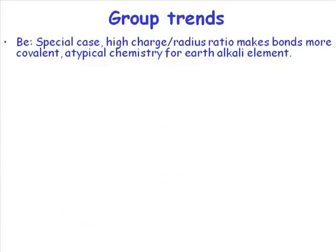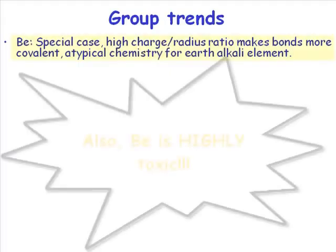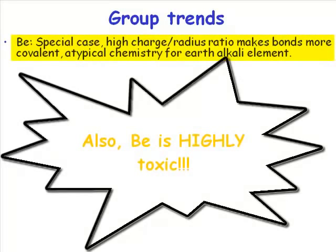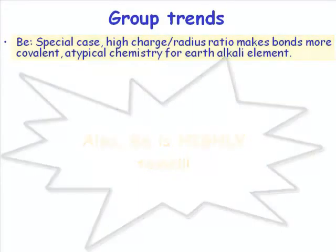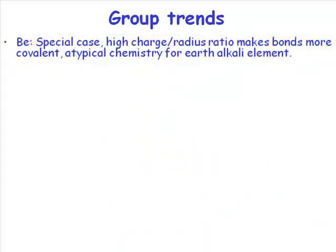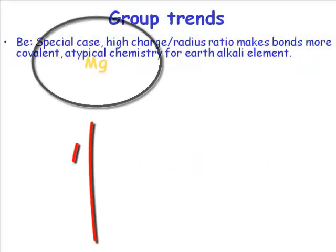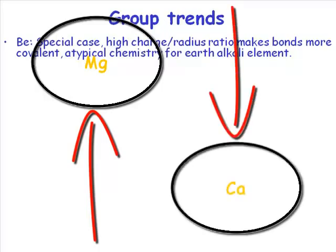Group trends. The second period elements are actually often a little bit anomalous when talking about the general pattern of chemistry of the group. So beryllium is not that representative of all of group 2 chemistry. If you want an element that is representative of group 2 chemistry, then choose magnesium or choose calcium.